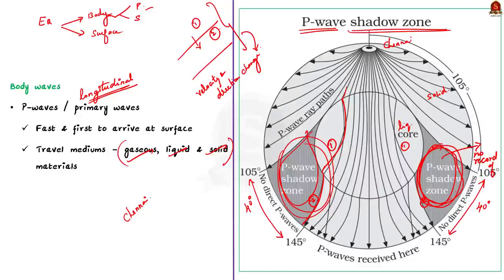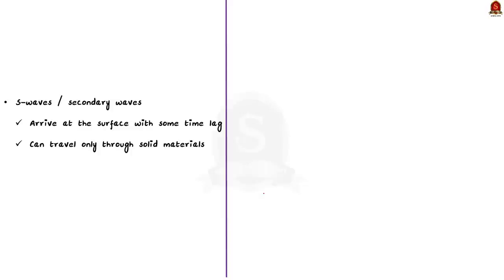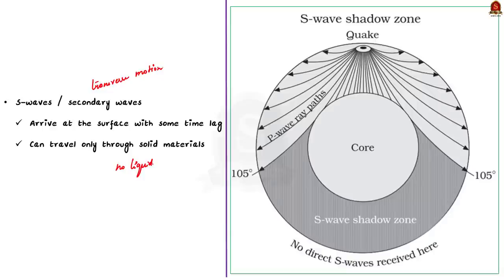Now let us move on to the S waves. S waves travel in transverse motion and cannot travel in liquids. So there will be a larger shadow zone for S waves when compared with the P waves. Because S waves cannot travel in the liquid medium, the entire inner core region is the S wave shadow zone. And this is all about the shadow zone of the two types of body waves.